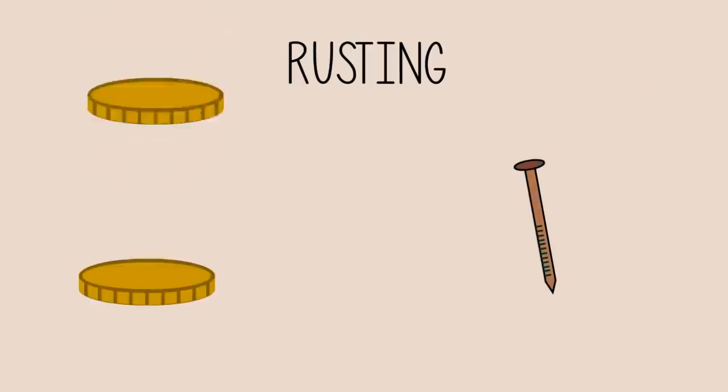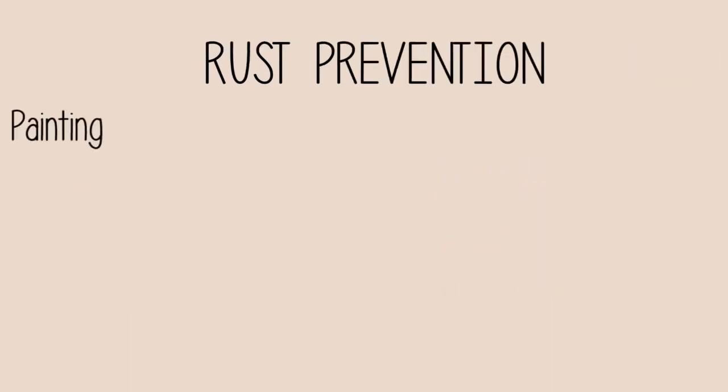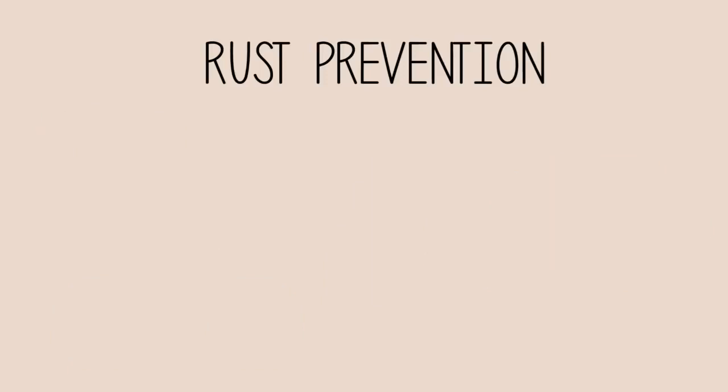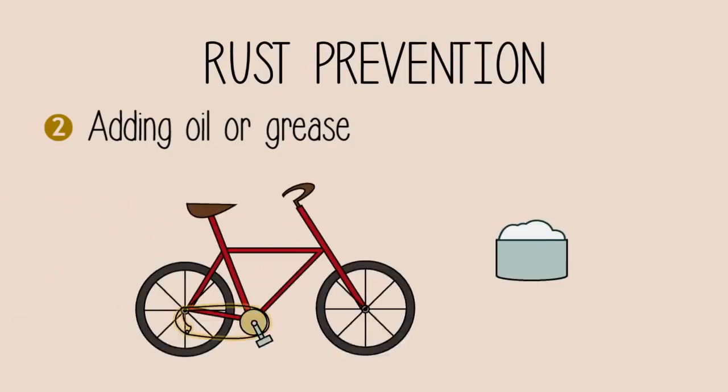Rusting can be very costly if we have to constantly replace items made of iron and steel. Rust can be prevented if we paint the areas exposed to oxygen and moisture. This is done on many bicycles and cars. Another method to prevent rust is by placing a layer of oil or grease. This is done on many bicycle chains. It helps lubricate the moving parts, which reduces friction and slows down the rusting process.